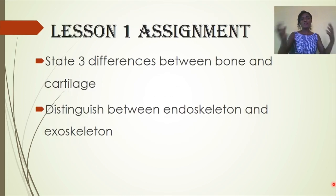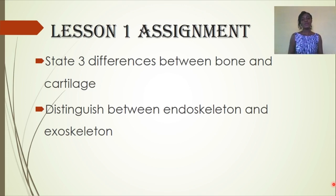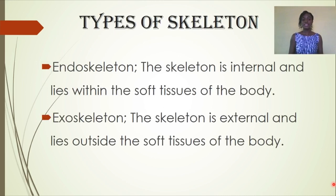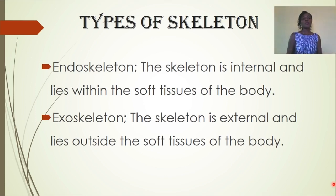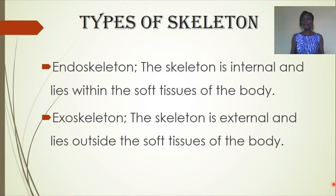As you may have noticed from your assignment, endoskeleton and exoskeleton refer to the two types of skeleton. When you hear 'endo,' what comes to mind? Inside, internal, inward. So we are looking at a type of skeleton which lies internal or within the soft tissues of the body. The opposite would be the exoskeleton, where the skeleton is external and lies outside the soft tissues of the body.